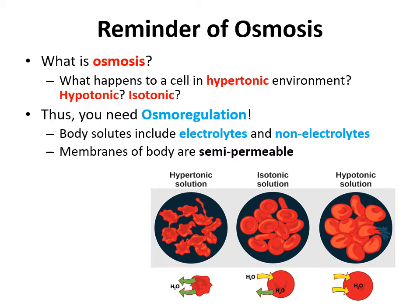Electrolytes — think of Gatorade, which has a very salty taste — are solutes that break down into ions when dissolved in water. The big example is salt: NaCl breaks down into Na+ and Cl- ions, the positive sodium and negative chloride ions.